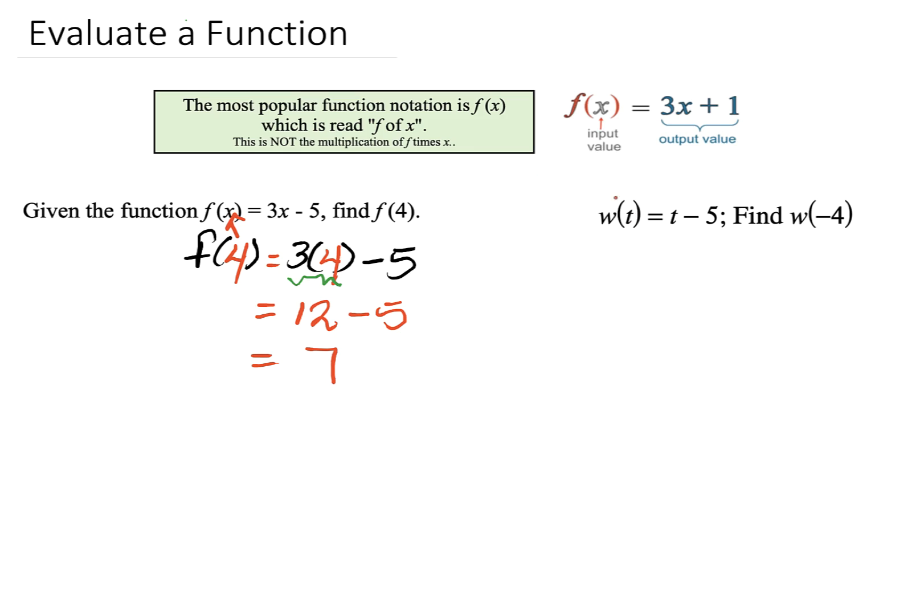Notice my function here is w of t equals t minus 5. Your function notation can be any letter in the alphabet. However, f is the most popular used function notation. But I always tell my students, there are 26 letters in the alphabet, and they can use any letter they want to represent function. So here, I'm using w. W for War.